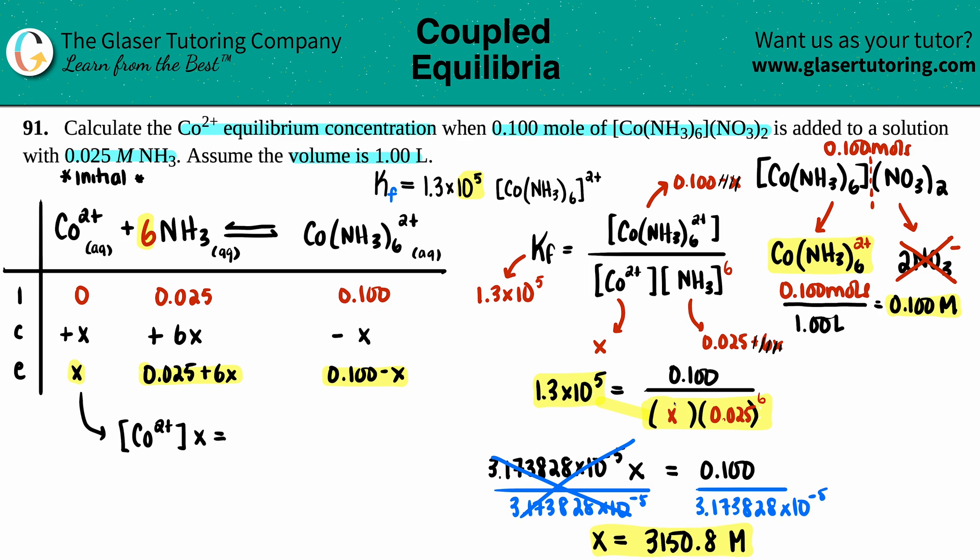And looks like we needed to keep this to two sig figs, so maybe I will say that this is 3.2 times 10 to the 1, 2, 3, molarity. And then that's what it would be here: 3.2 times 10 to the third molarity.